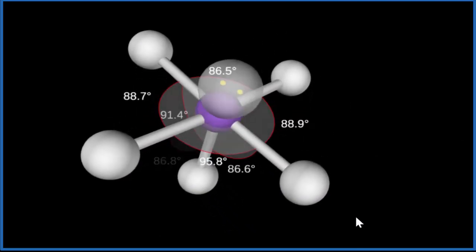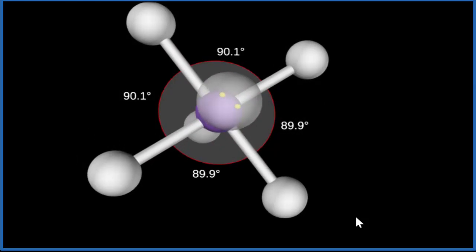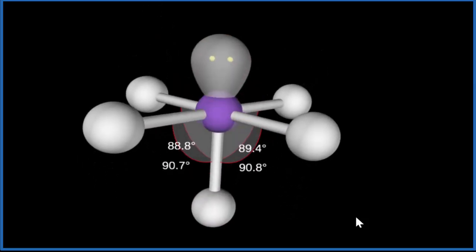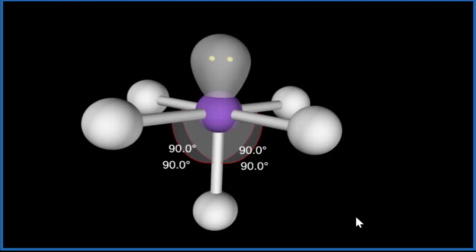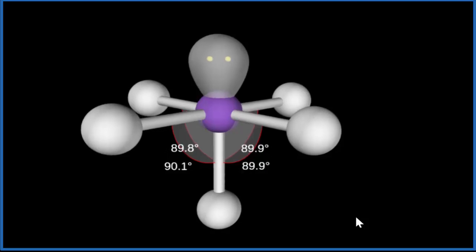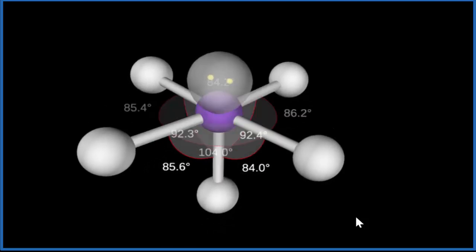And you can see the bond angles, they're all 90 degrees. So when we're looking at a square pyramidal molecular geometry, we'll have one, two, three, four, five atoms, and a lone pair.